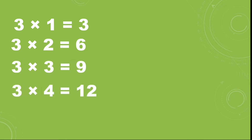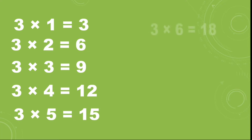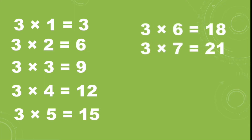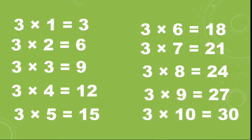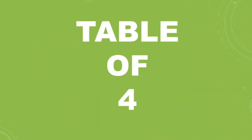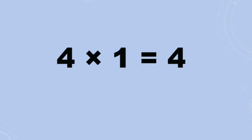Three fours are twelve, three fives are fifteen, three sixes are eighteen, three sevens are twenty-one, three eights are twenty-four, three nines are twenty-seven, three tens are thirty. Table of four. Four ones are four.